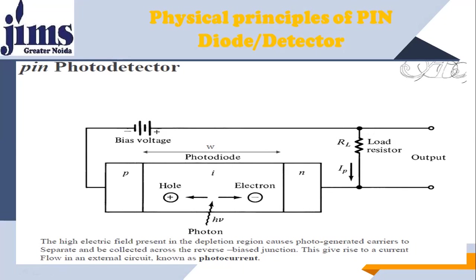There is a high electric field present in the depletion region. When electrons and holes are tied together they are under stress because of the electric force. Even a little bit of impact from this photon having energy hμ causes the electron-hole pairs to become free and creates a photocurrent. The high electric field in the depletion region causes photo-generated carriers to separate and be collected across the reverse-biased junction, giving rise to a current flowing in an external circuit known as photocurrent, which provides the output.